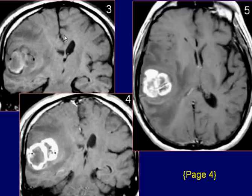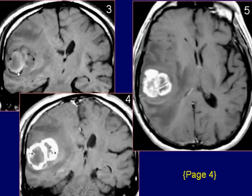Coronal T1-weighted images of the brain reveal a ring-like high-signal intensity area within the lesion, which is likely due to subacute hemorrhage.